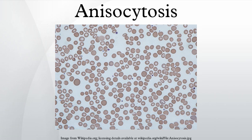In addition, anisocytosis is a characteristic feature of bovine blood. The red cell distribution width (RDW) is a measurement of anisocytosis and is calculated as a coefficient of variation of the distribution of RBC volumes divided by the mean corpuscular volume (MCV).